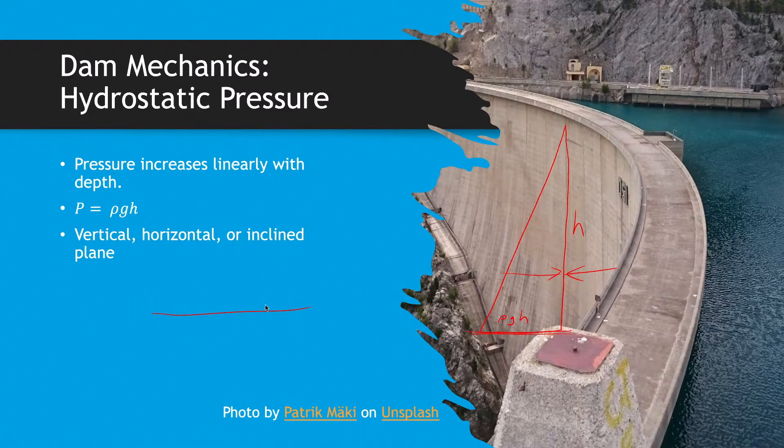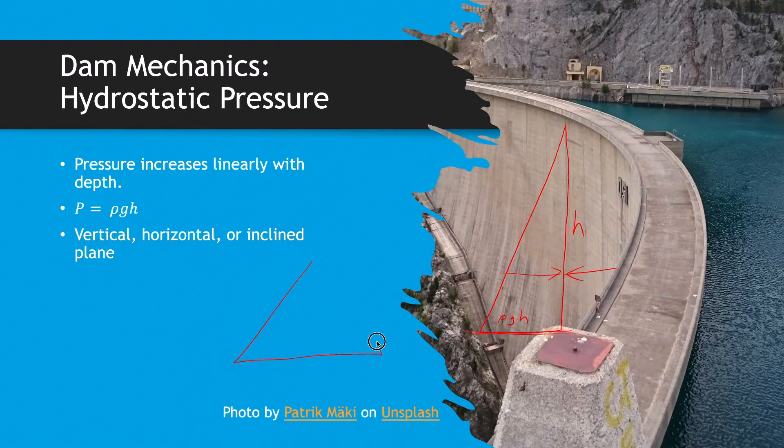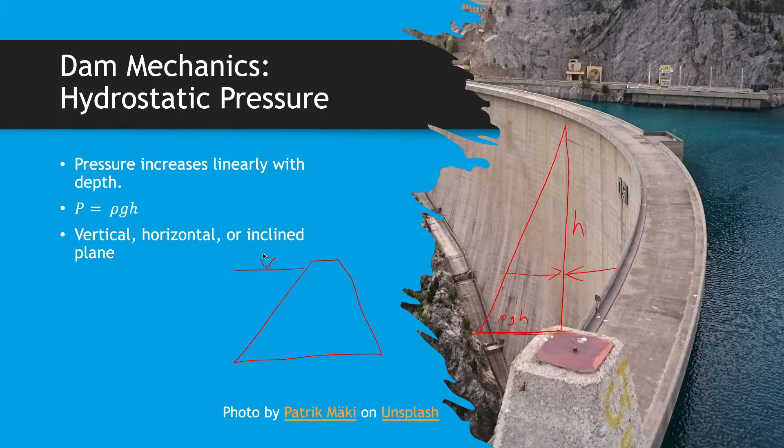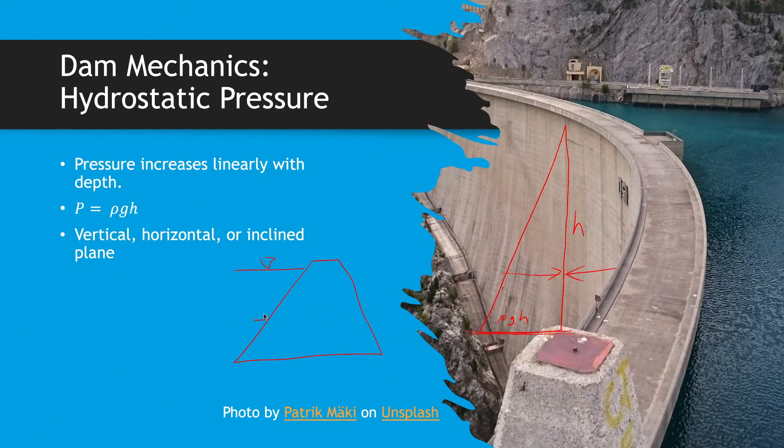And then if you have an incline plane, that's where things start to get a little bit more complicated. So if you had a dam like this where you have a wider base and you have your fluid over here, well, now you actually have two components of force. You have a horizontal force working on the dam, but then you have a vertical force working down on the dam, which actually can be beneficial. This is one of the reasons sometimes there is an incline face on a dam. It's because this force will actually help prevent any sort of tipping of the dam and help actually secure it better.